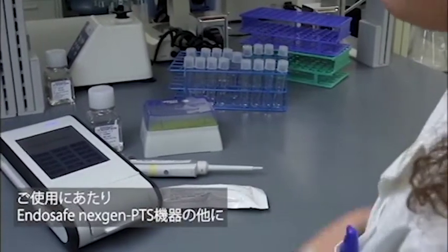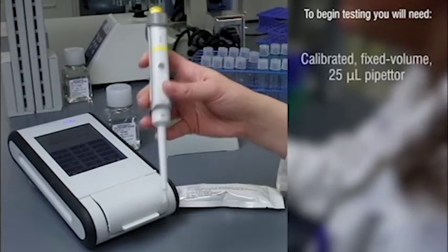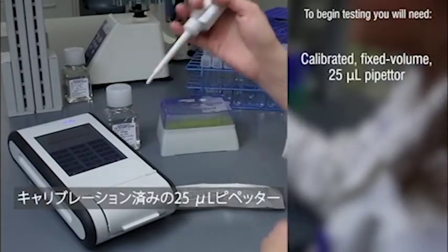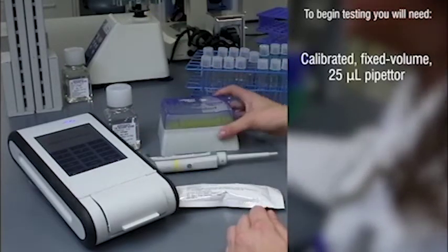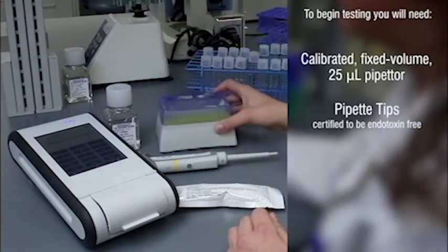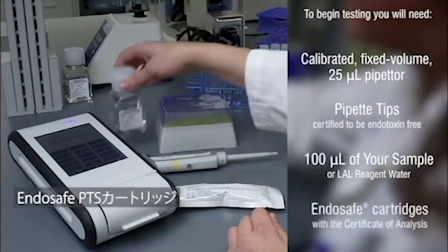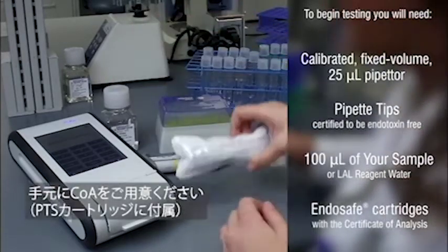In addition to your NextGen PTS reader, to begin testing you will need a calibrated fixed volume 25 microliter pipetter, pipette tips certified to be endotoxin free, your sample or LAL reagent water, and EndoSafe cartridges with the certificate of analysis.